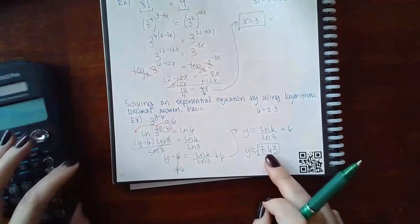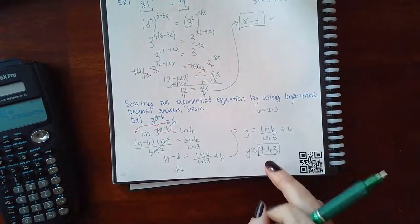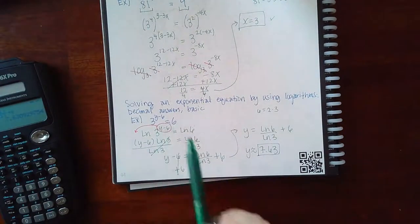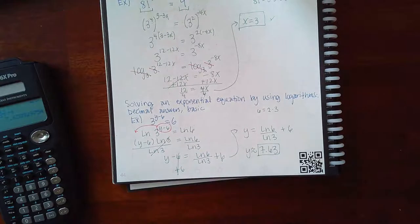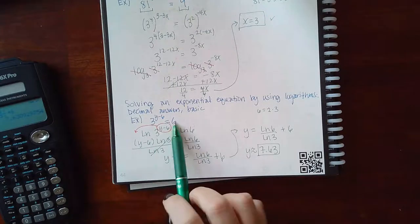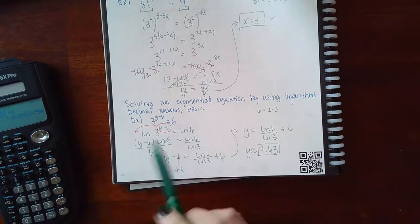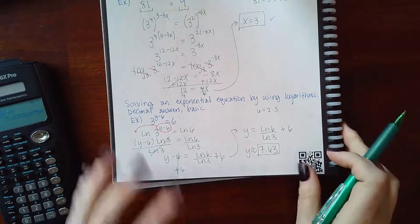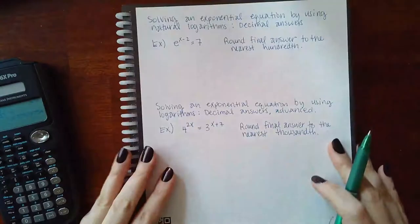And as long as this doesn't make one of the logs, there were no logs in my original equation, so I don't have to worry about that answer making any of my arguments or my bases negative. Since there are no arguments or bases here, there's only an exponent. Let's keep going.